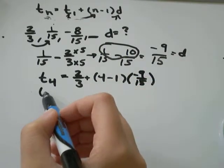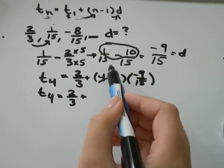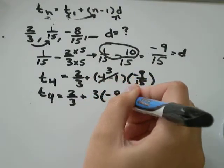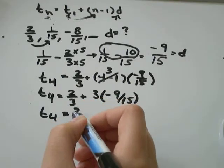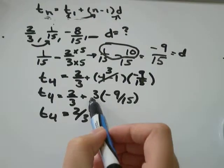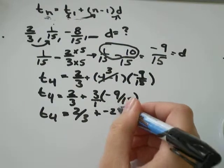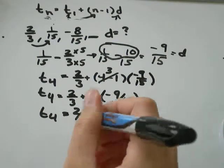And then simplify as much as you can, 2 thirds plus 4 minus 1 would just be 3, so I've got 3 times negative 9 over 15. When you are trying to multiply with a fraction, all you need to do is make your whole number over 1 and multiply the top, 3 times 9 would be negative 27, over 1 times 15 would be 15.